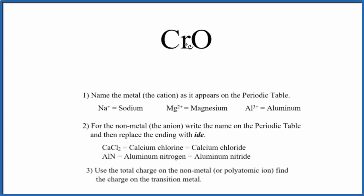To write the name for CrO, we first need to recognize that we have a metal and a nonmetal. So we're going to name this as an ionic compound.